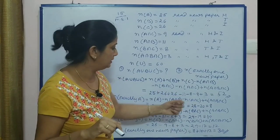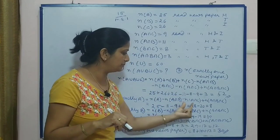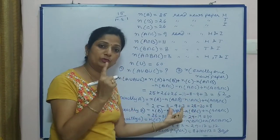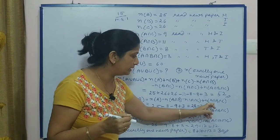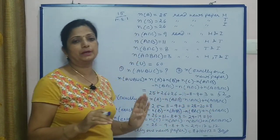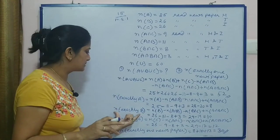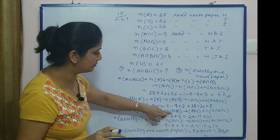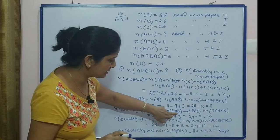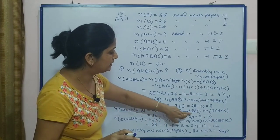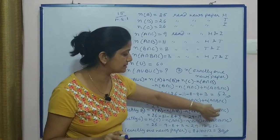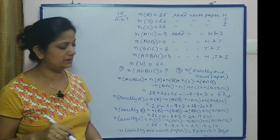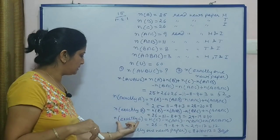Exactly A means: n(A) minus n(A∩B) minus n(A∩C), then plus n(A∩B∩C). Similarly, exactly B: n(B) minus n(A∩B) minus n(B∩C), plus n(A∩B∩C). We find C the same way, then add all three together.